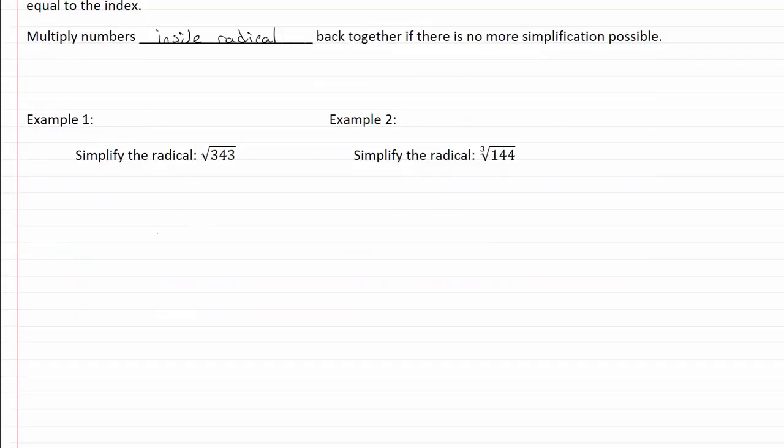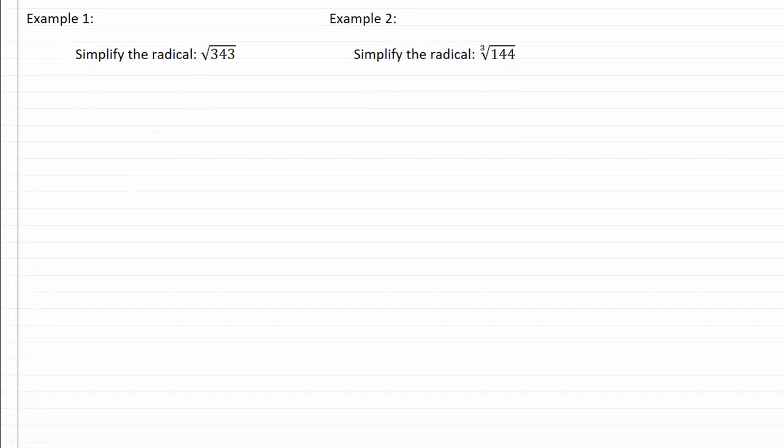Let's take a look at our two examples here. So here we have the number 343. First thing that I want to do is I want to do a prime factorization for it. So I need to find something that I can divide 343 by.